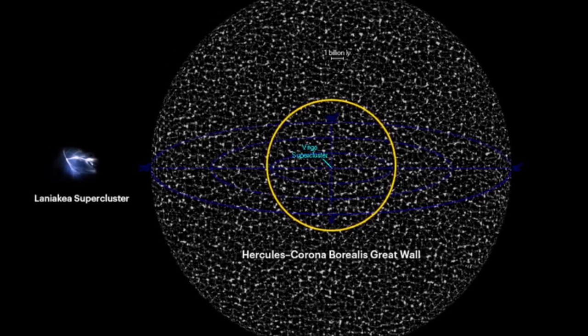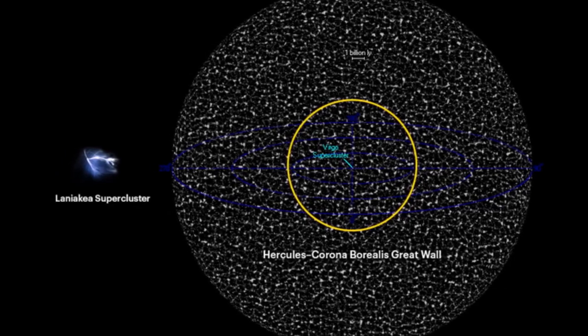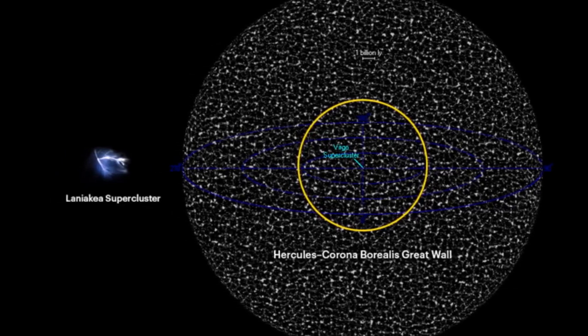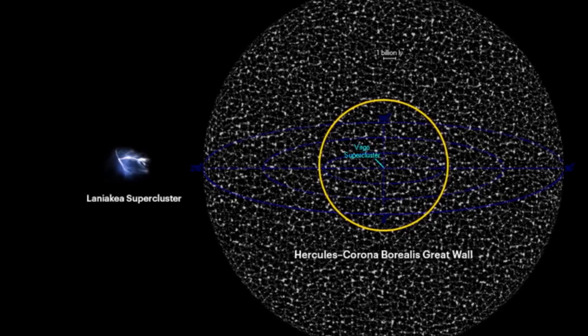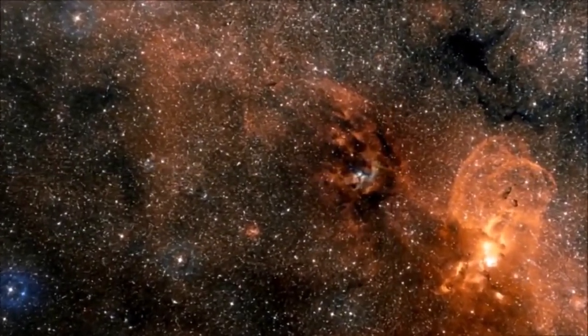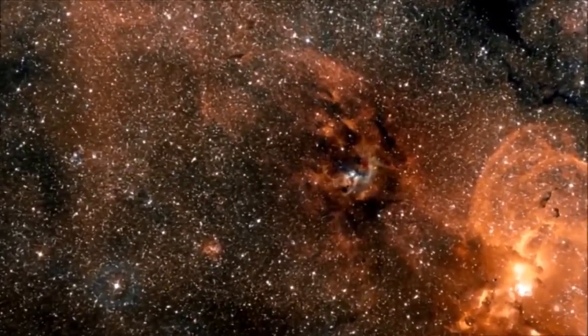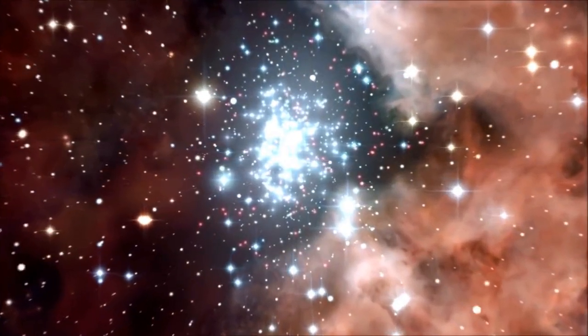The Earth is also incredibly small compared to the Hercules-Corona Borealis Great Wall. The diameter of the Earth is approximately 12,742 kilometers, while the diameter of the Hercules-Corona Borealis Great Wall is estimated to be around 10 billion light-years, which is equivalent to about 9.5 times 10 to the power of 22 kilometers.